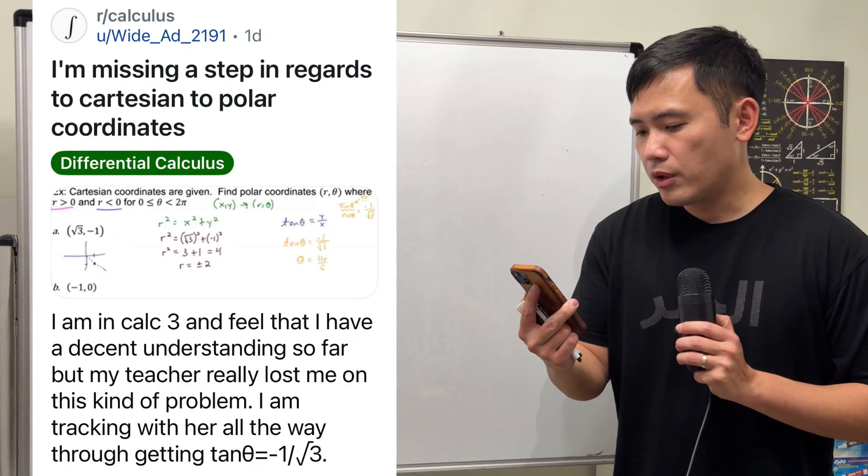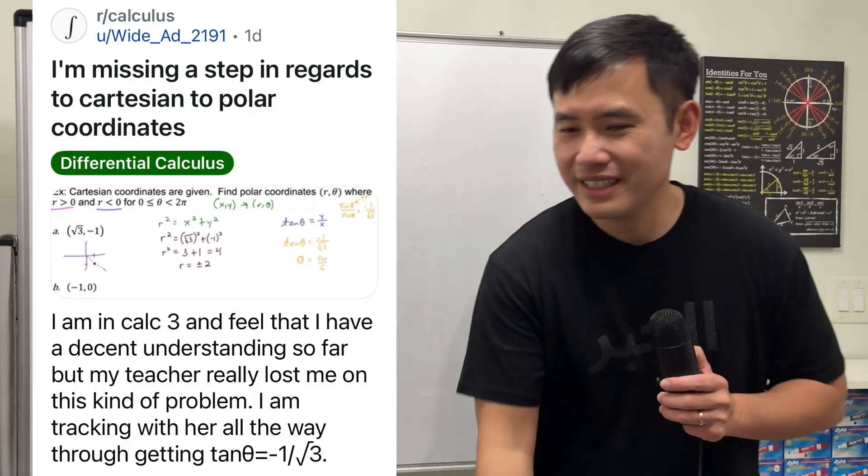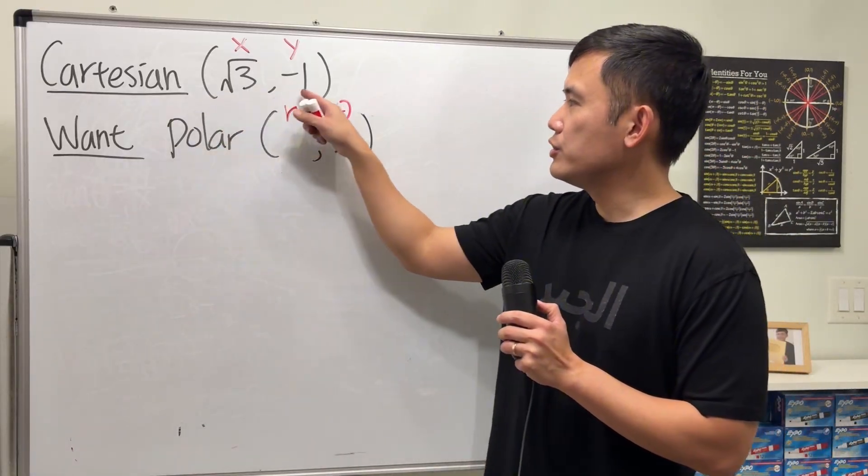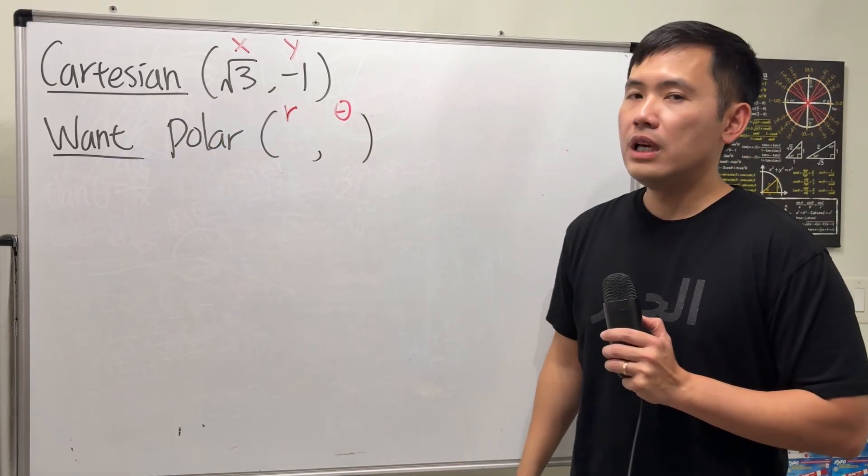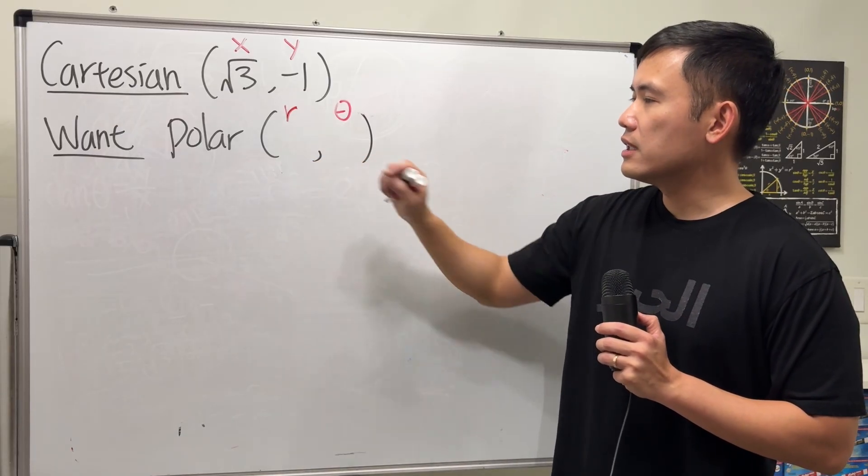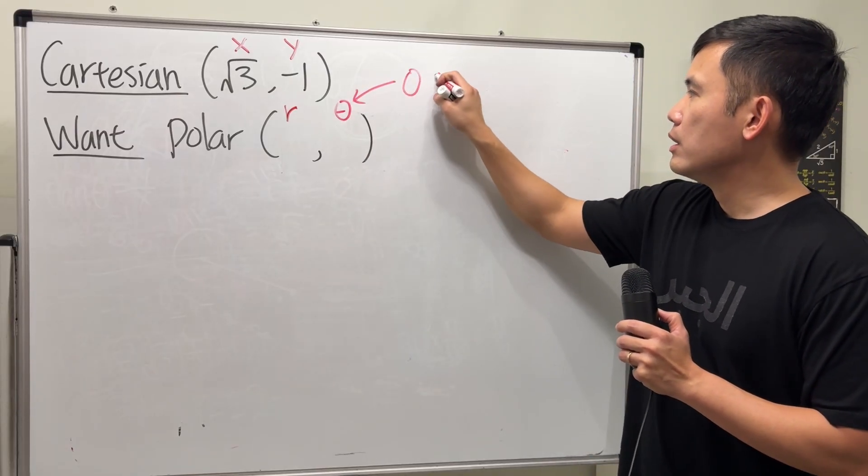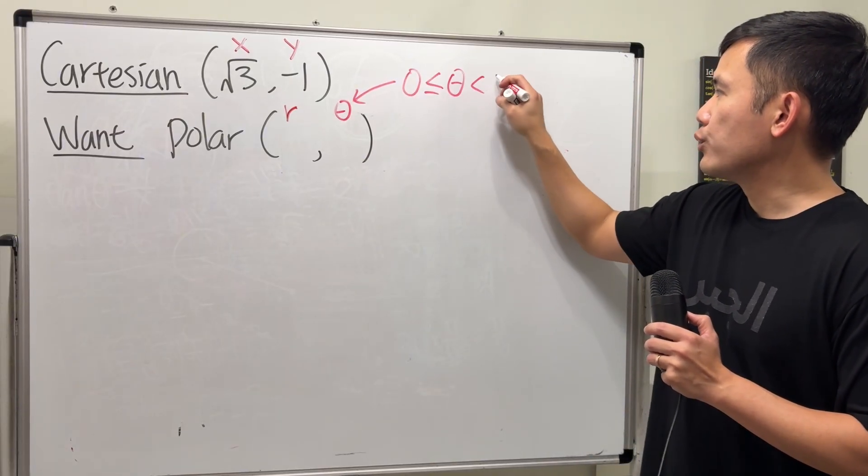I'm missing a step in regards to Cartesian to polar coordinates. Okay, let's have a look. Right here, we are going to convert this Cartesian coordinate to polar, and we are going to give two answers. The first one is with positive r, and the second one is with negative r. And both answers have to have the angle between 0 and 2π.